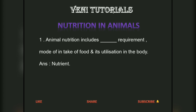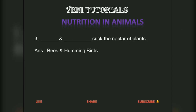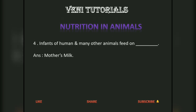Animal nutrition includes the requirement, mode of intake of food, and its utilization in the body. The breakdown of complex components of food into simpler substances is called digestion. Bees and hummingbirds suck the nectar of plants. Infants of humans and many other animals feed on mother's milk.